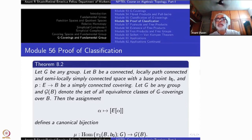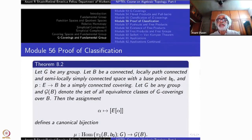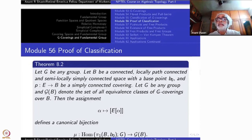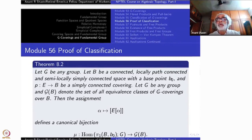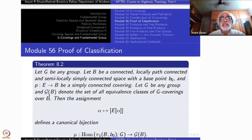Today let us begin with the statement of the classification theorem. We begin with a group G and a connected, locally path-connected, semi-locally simply connected space B with a base point B₀, and a simply connected covering P from E to B. Of course G can be any group.